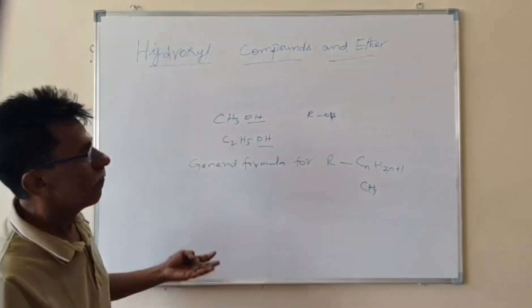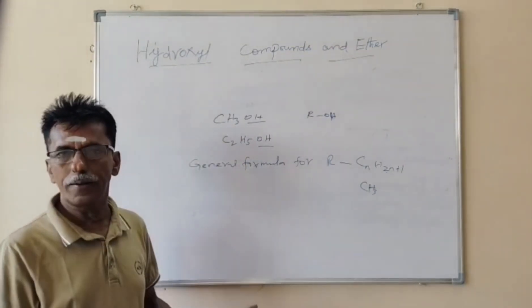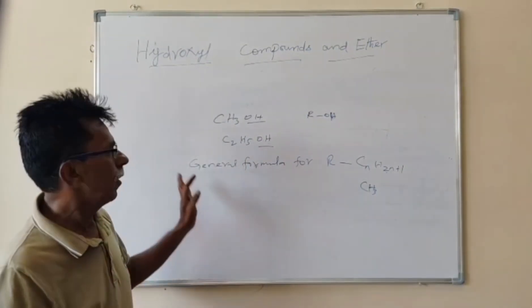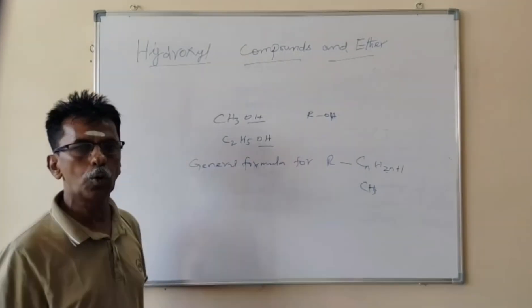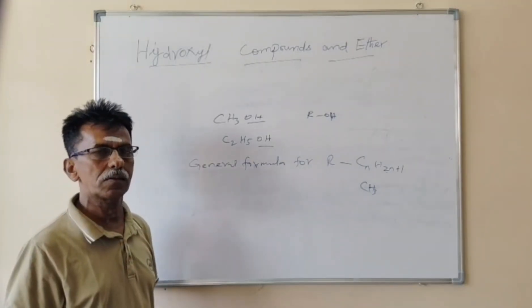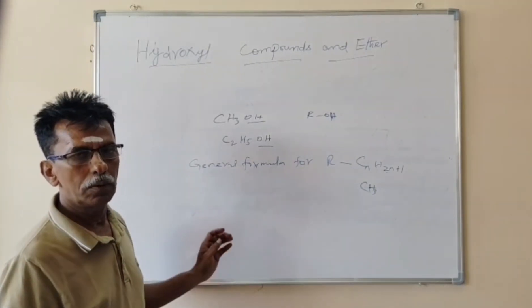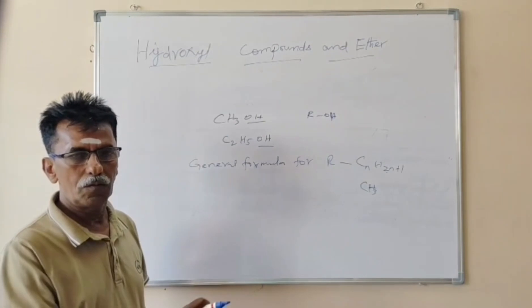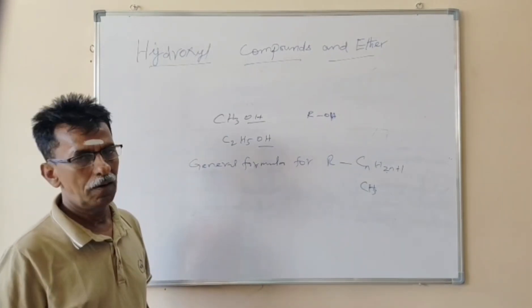Likewise, whatever be the Hydroxyl number, you can write: Meth, Eth, Prop, But, Pent, Hex, Hept, Oct, Non — that is for 1, 2, 3 and so on in the Latin numbers.